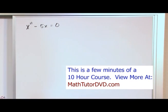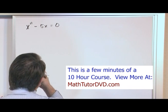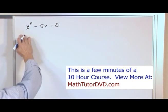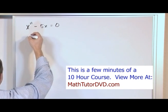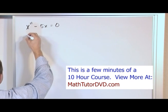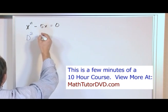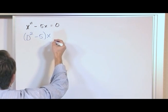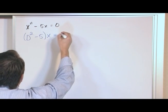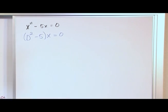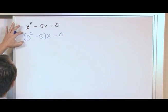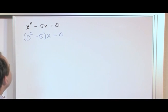The first thing we do is rewrite it in operator notation. So we learned how to do that a few sections ago. Basically, the second derivative becomes D² - 5. We wrap it in parentheses, operating on some function x(t), and we make it equal to zero.